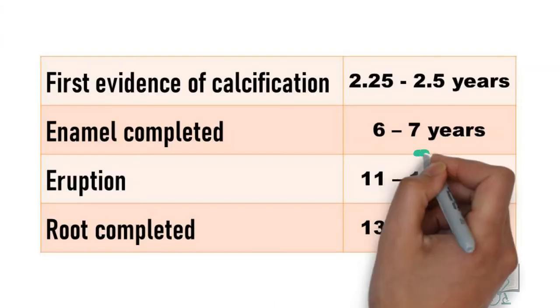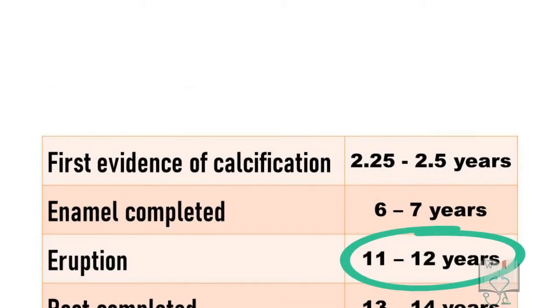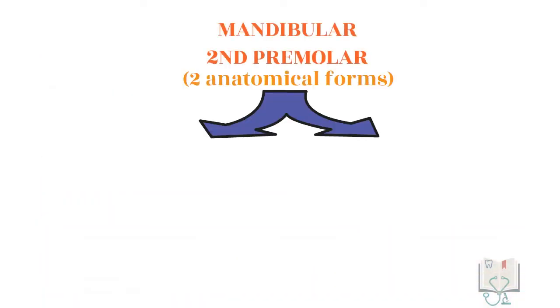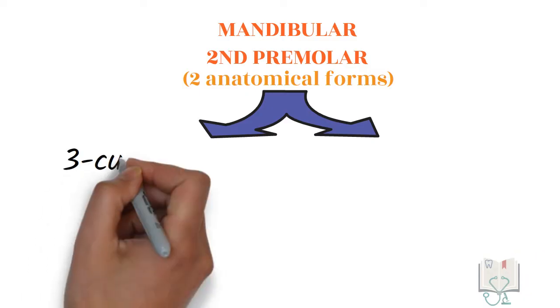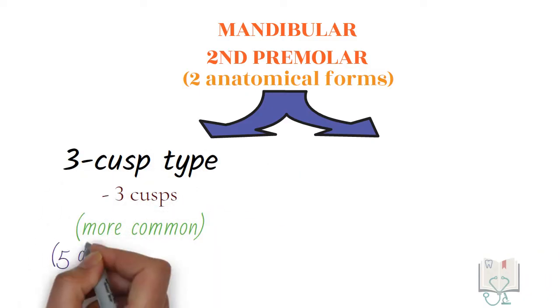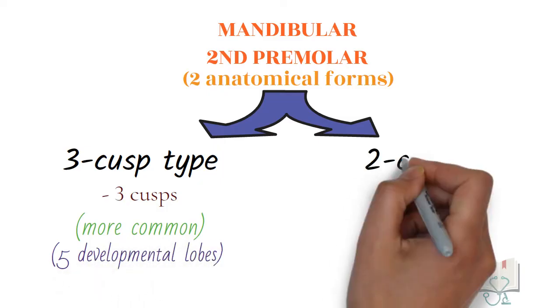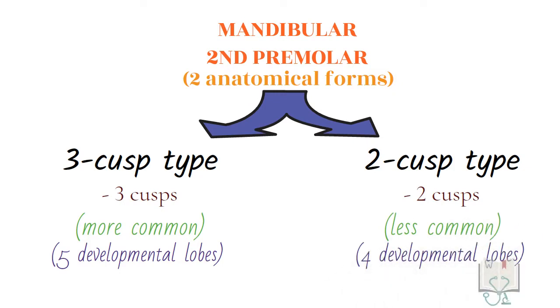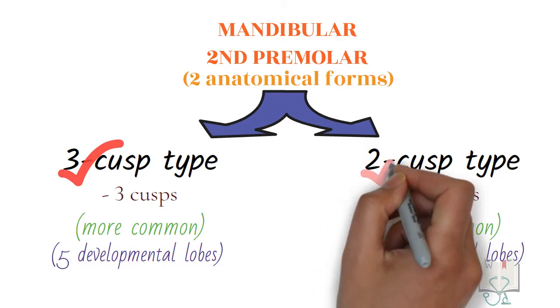Next, the chronology: the tooth erupts at the age of 11 to 12 years. Morphologically, the mandibular second premolar is present in two forms. The three-cusp type with three cusps is more common and develops from five developmental lobes. The two-cusp type with two cusps is less common and develops from four developmental lobes. Here we will discuss the three-cusp type in detail and mention the differences in the two-cusp type.